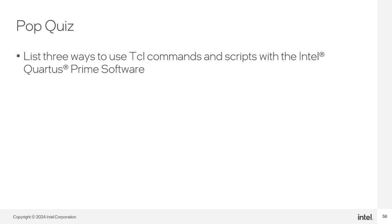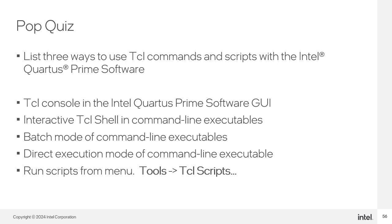This is the final pop quiz: list three ways to use Tickle commands and scripts with Intel Quartus Prime software. Possible answers include: using the Tickle console in the Intel Quartus Prime software GUI; running an interactive Tickle shell with a command line executable; performing batch mode execution of a Tickle script with command line executables; performing direct execution of Tickle commands with the executables; or running Tickle scripts using the Tickle Scripts GUI from the Intel Quartus Prime software tools menu.